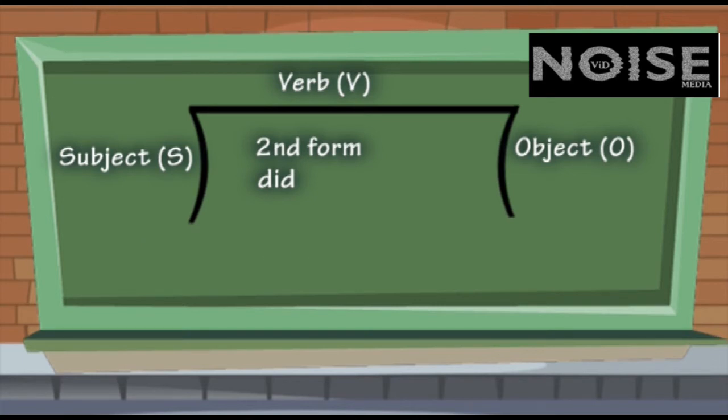Question form, very easy. Bring DID to the beginning. For example, Did Aasim write a letter? Did you pluck a flower? In writing, you must add a question mark at the end. And in speech, your tone should be high, because it's a question. You're asking something. It is not a statement.